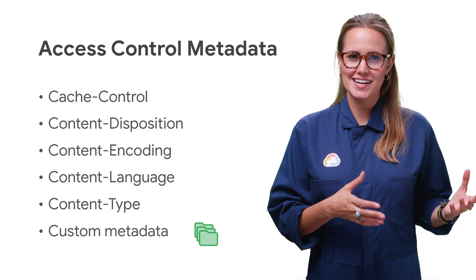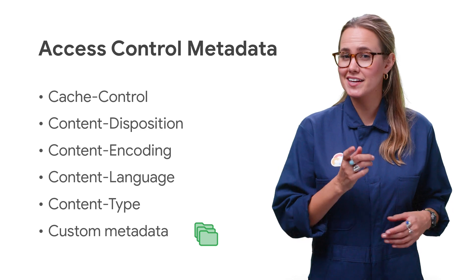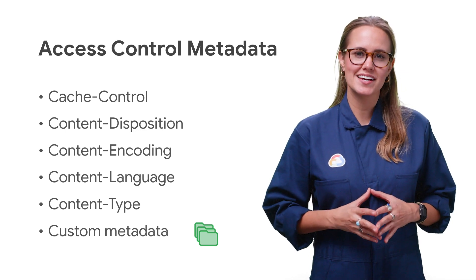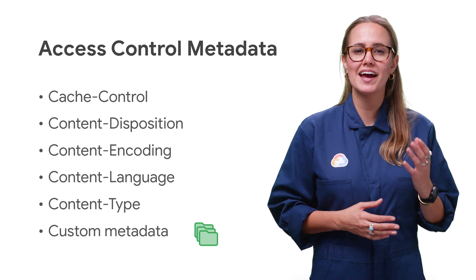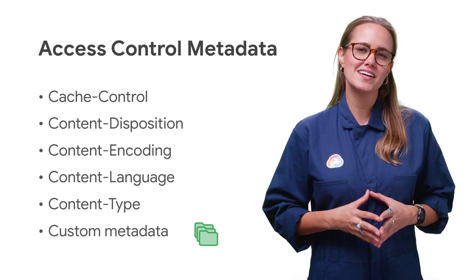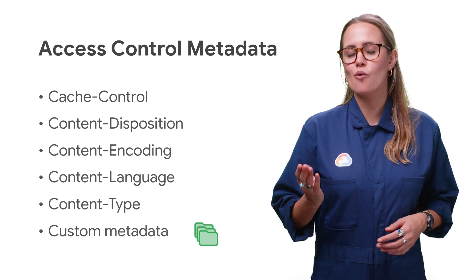Custom metadata are like standard metadata, except you can specify custom metadata key-value pairs. To create custom metadata, you specify both a value and a key. Once you have created a custom metadata key-value pair, you can delete the key or change the value. You can edit fixed key and custom metadata from the REST API, gsutil, and the Cloud Platform console.